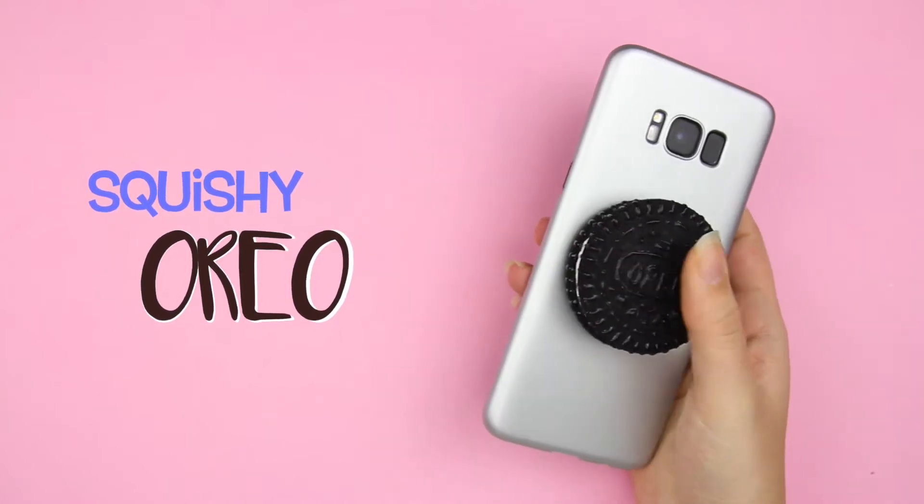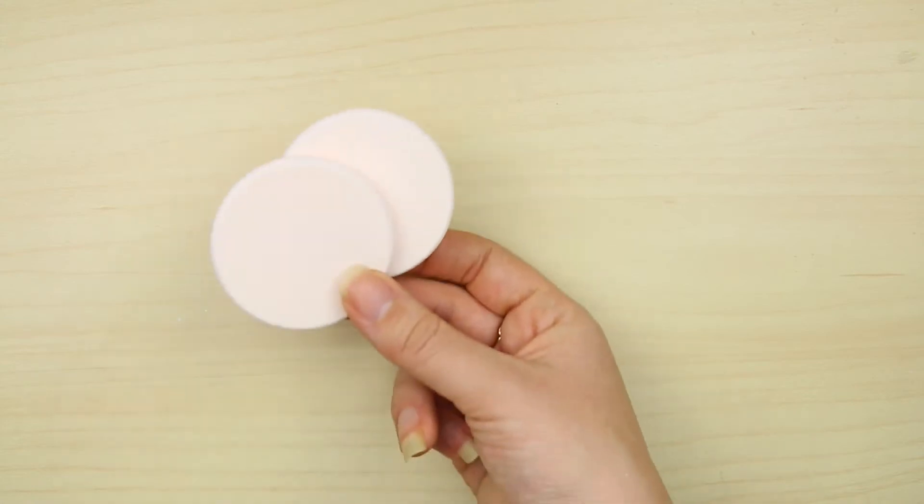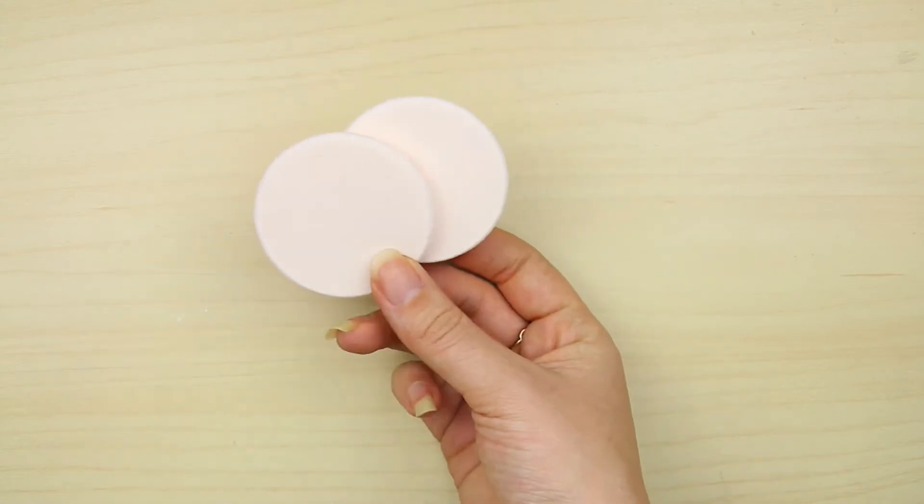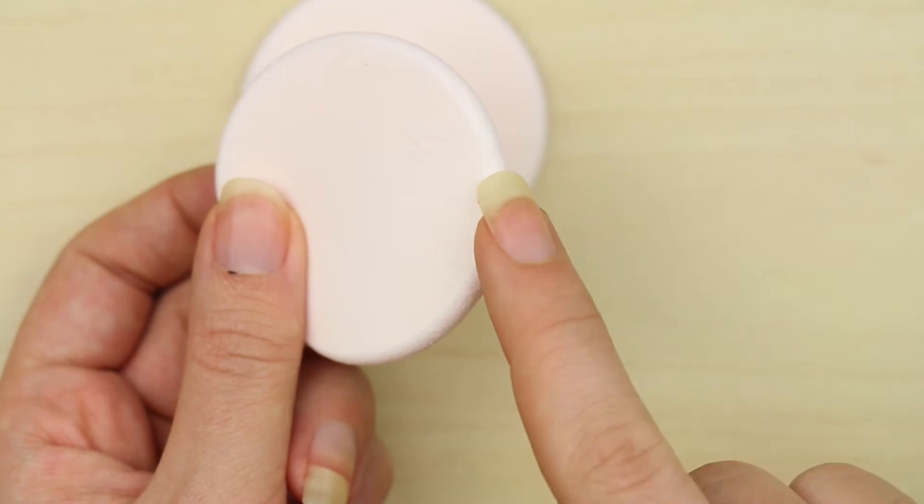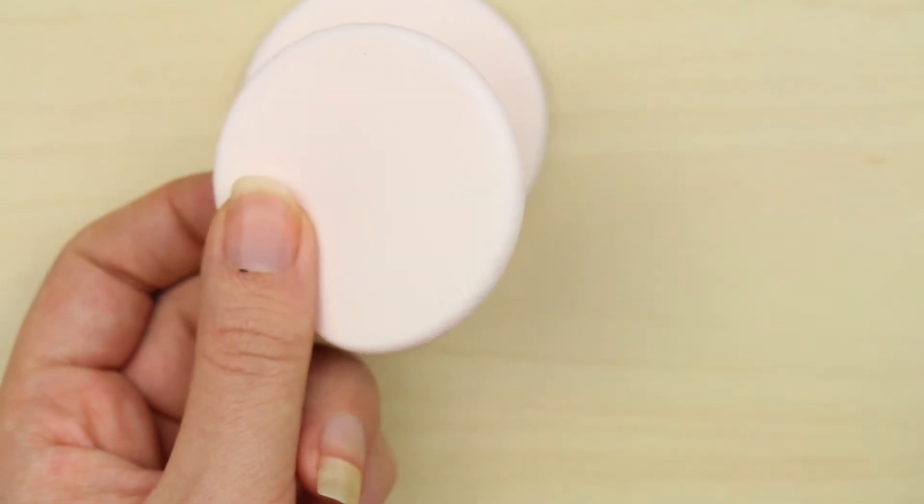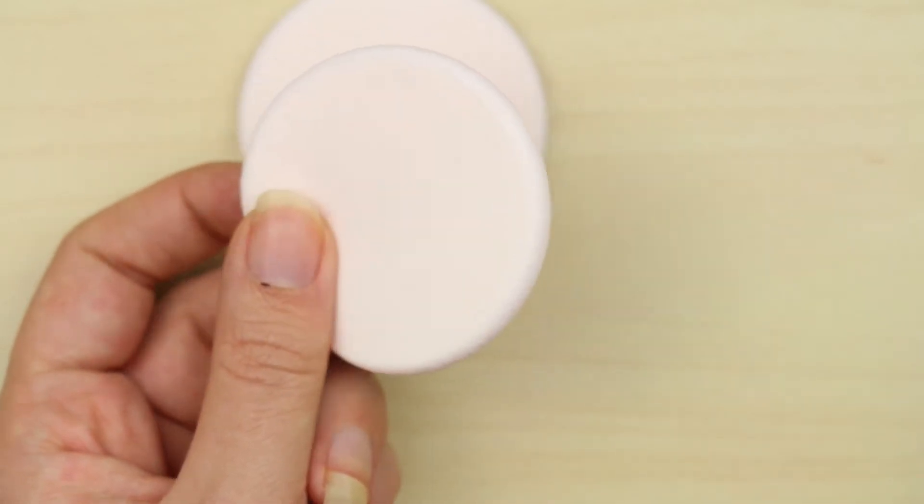And funny enough, this wasn't even part of the original idea, but it does the job so well that I thought I have to mention it. First off, you will need some round makeup sponges. If possible, get some with the rounded edge. It's not a must, but it helps the whole thing look like a real Oreo.